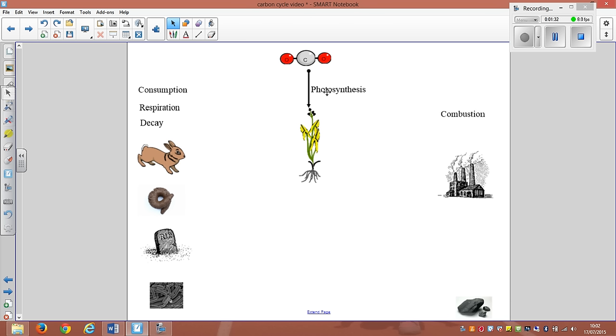The plant will make proteins, fats, DNA, carbohydrates—all containing this element carbon, which they have got from carbon dioxide in the atmosphere by photosynthesis.